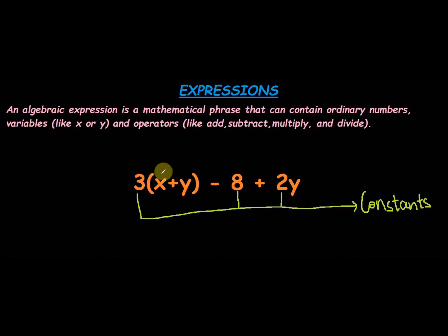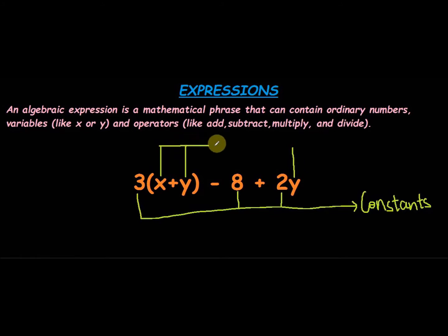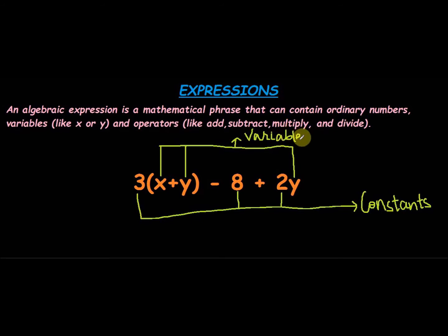The terms x, y, and this y here as well are all called variables. They are called variables because you don't know what their value is. The value of x and y can be anything — it can be 1, it can be 2, it can be 3. So they are called variables.